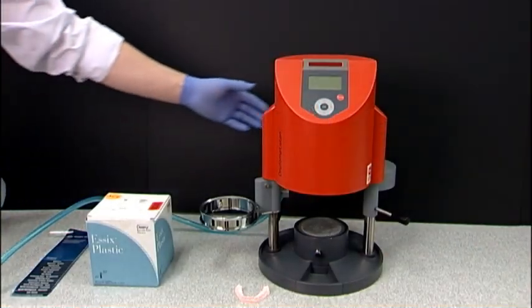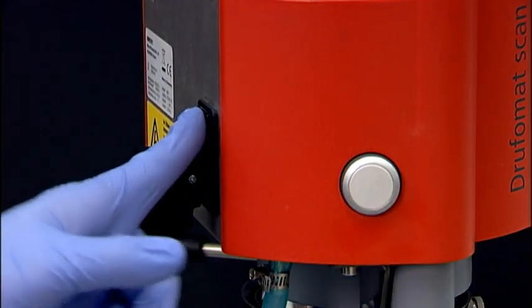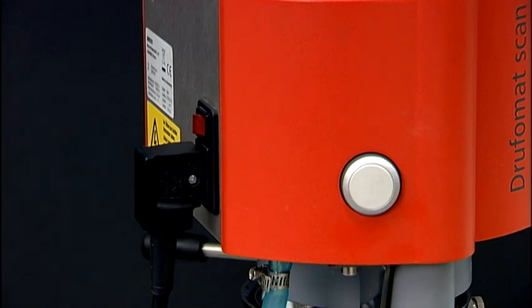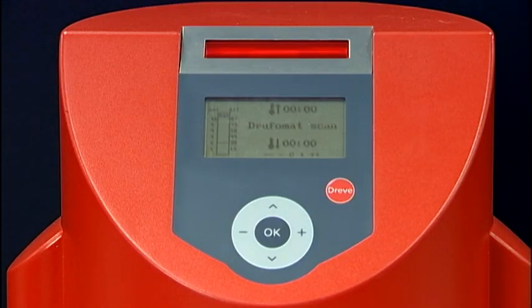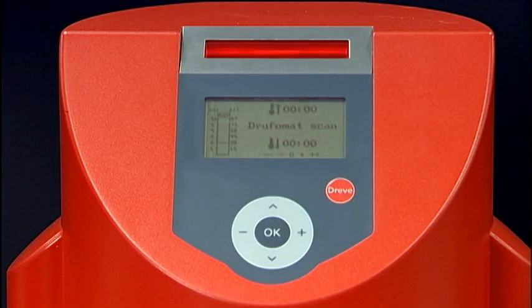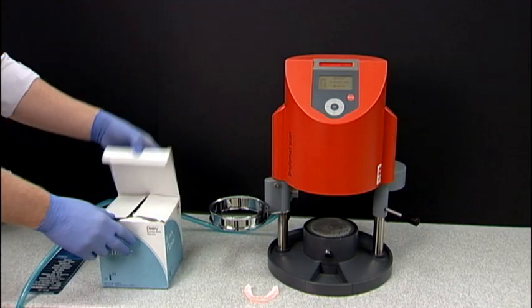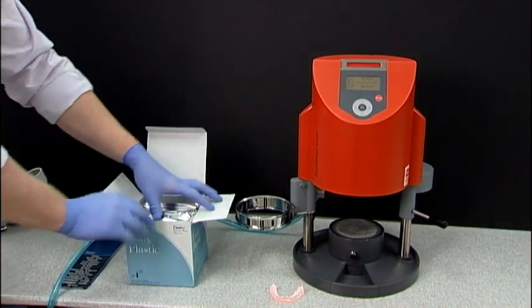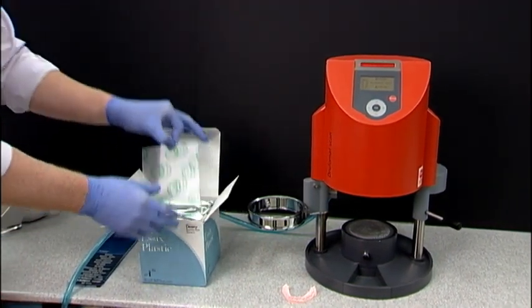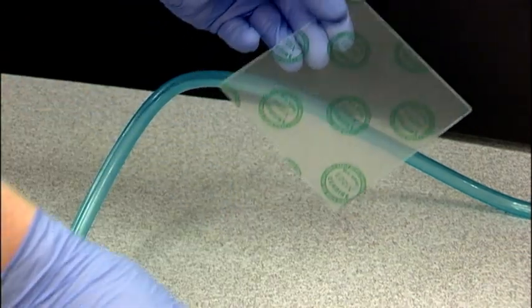Start by turning the Drufomat scan on. The switch is located on the back left side of the machine. There is no wait time for your Drufomat scan to heat up. The red laser will light up on top of the Drufomat and the screen will read Drufomat scan. Open the box of Essex Ace Plastic and remove one sheet. Be sure to remove both sides of the protective film.